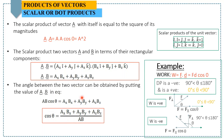A physical example of the dot product is work: W equals F dot d, where F is a vector and d is a vector, giving F times d times cosine of theta. There are two possibilities: if the angle is between 0° and 90°, we get a positive dot product; if the angle is between 90° and 180°, we get a negative dot product. So work can be either positive or negative.